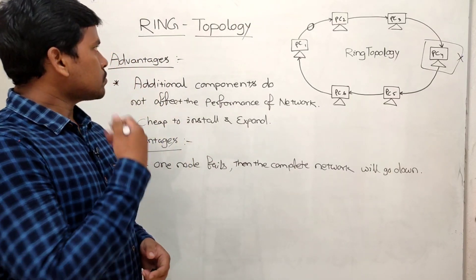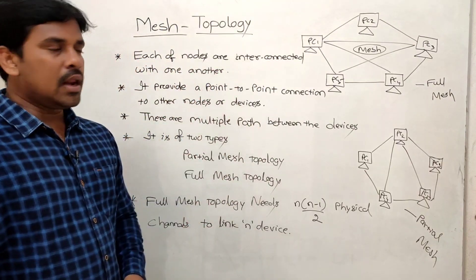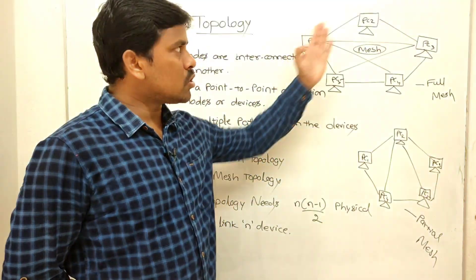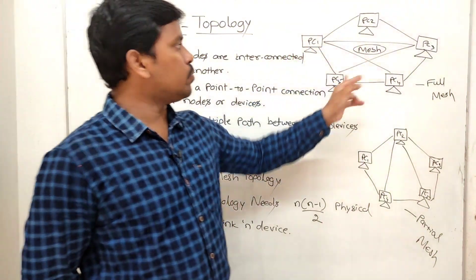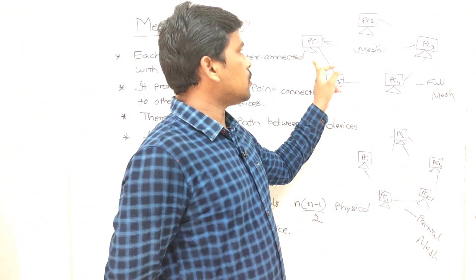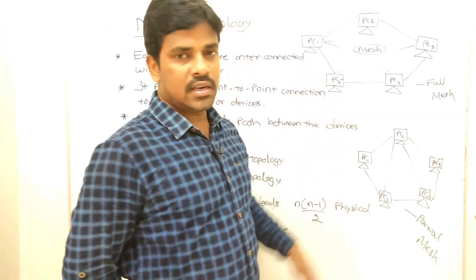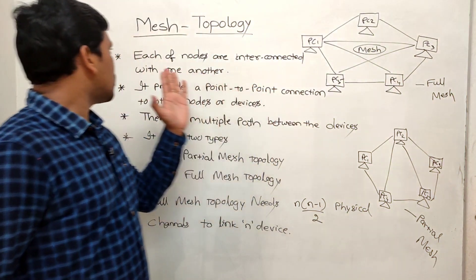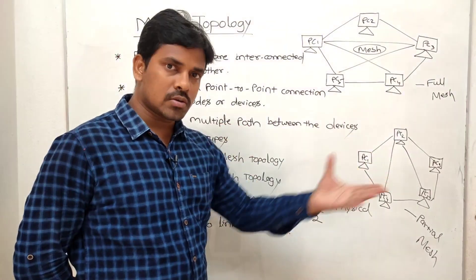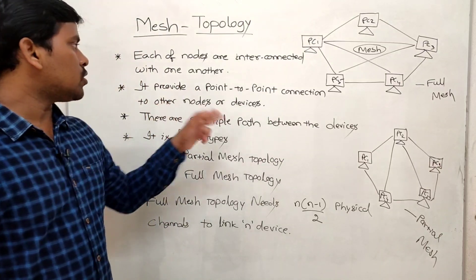Now let's look at mesh topology. The diagram shows the mesh topology with nodes such as PC1 through PC5. Each node is interconnected with every other node, providing a point-to-point connection to all other nodes or devices.